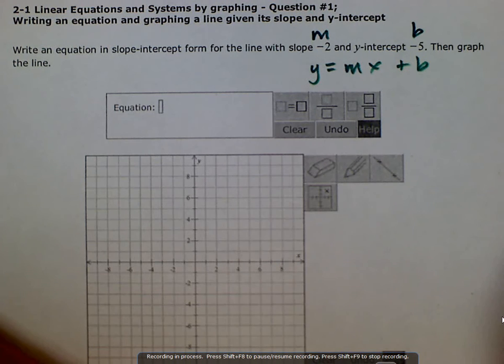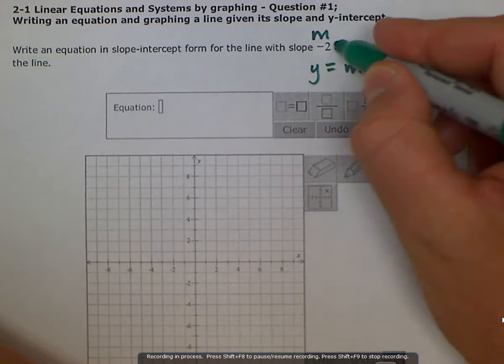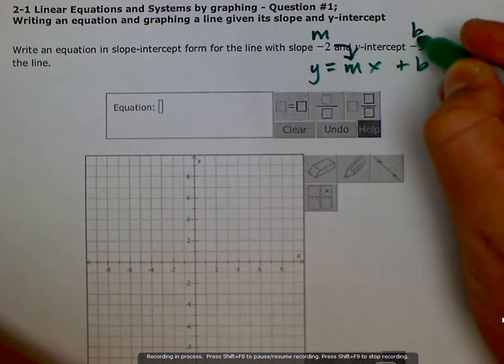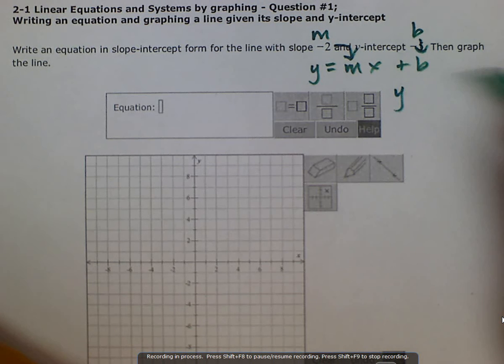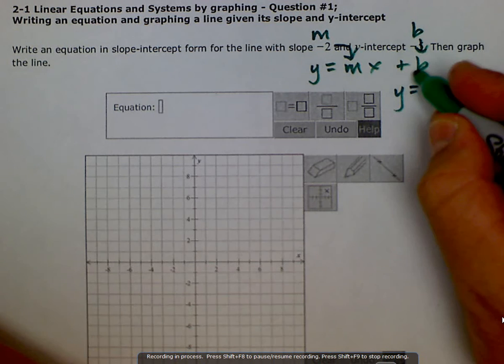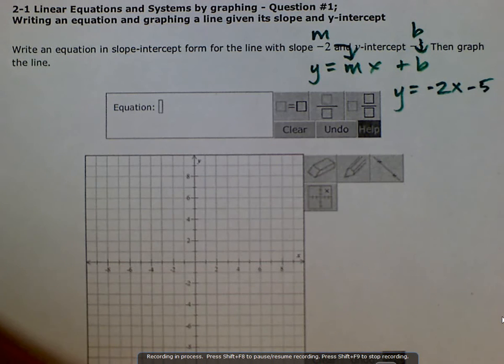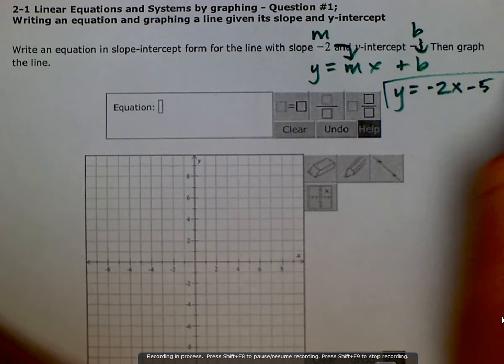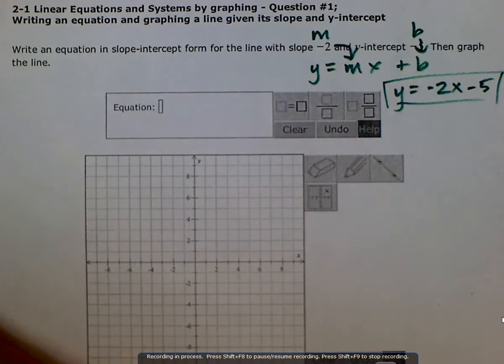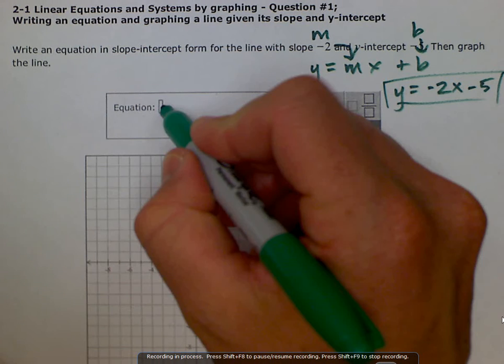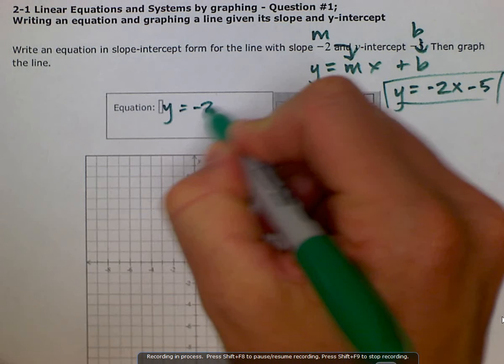We literally just have to plug these into the equation. Our equation is going to look like y equals negative 2 times x plus b, or because it is minus 5, it would be minus 5. So we can write y equals -2x minus 5.